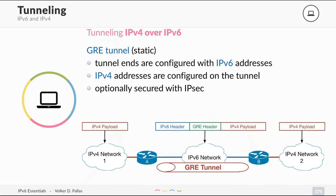To tunnel IPv4 over IPv6 — perhaps in a few years when the internet is IPv6-only but you still have IPv4 — you can also use a static GRE tunnel. The tunnel ends are IPv6, and on top of the tunnel you have IPv4 addresses; IPsec can be added optionally. The GRE tunnel is very versatile: you can run multi-protocol on top of it regardless of whether the base is IPv4 or IPv6. IPv4 payload is encapsulated with a GRE header and an IPv6 header, sent over the tunnel, and decapsulated by the destination router. So IPv4 over 6, 6 over 6, 6 over 4 — with GRE, it's all the same.